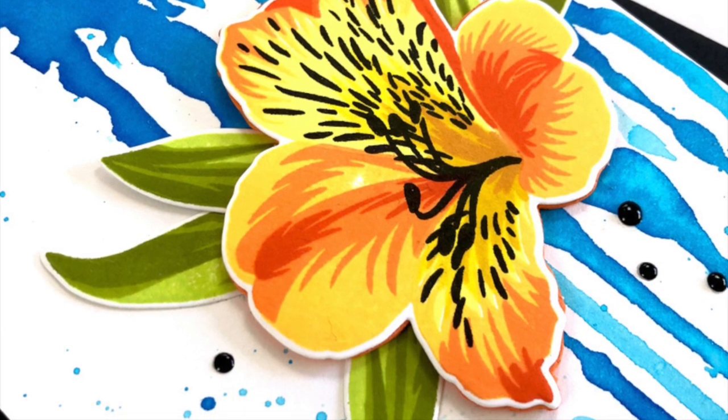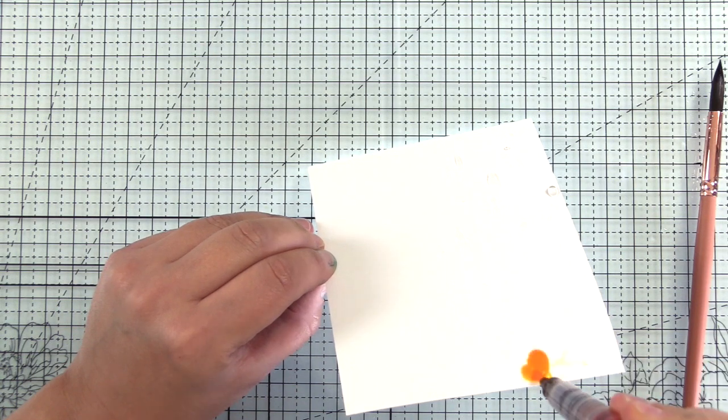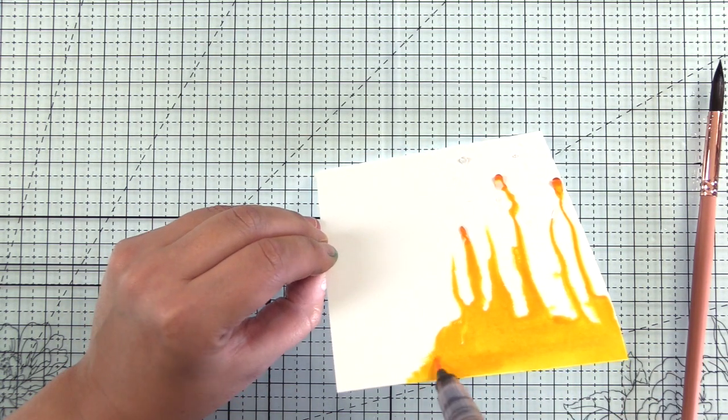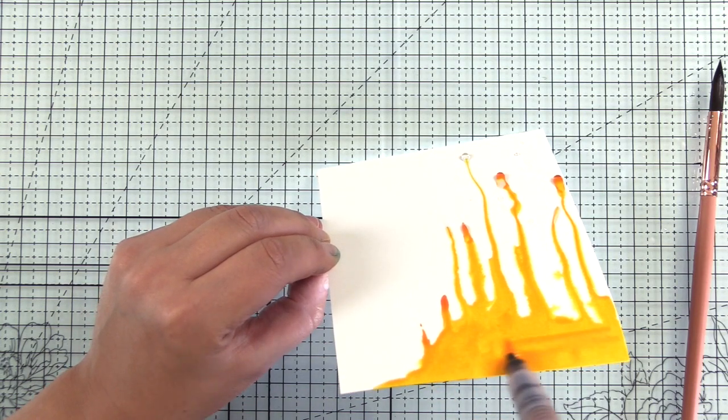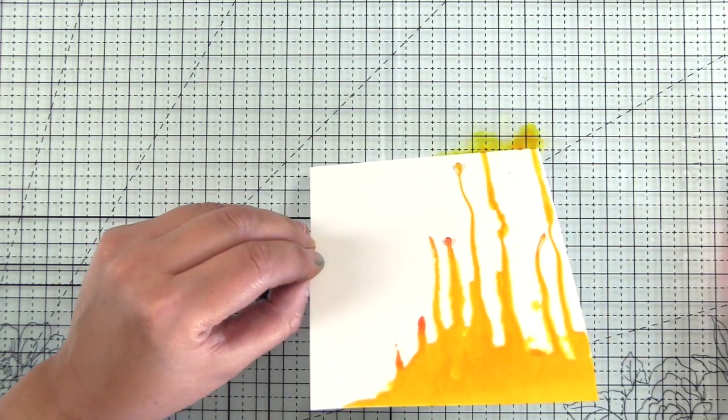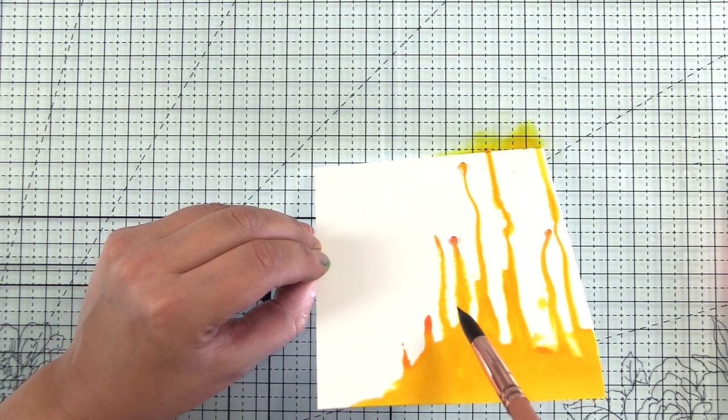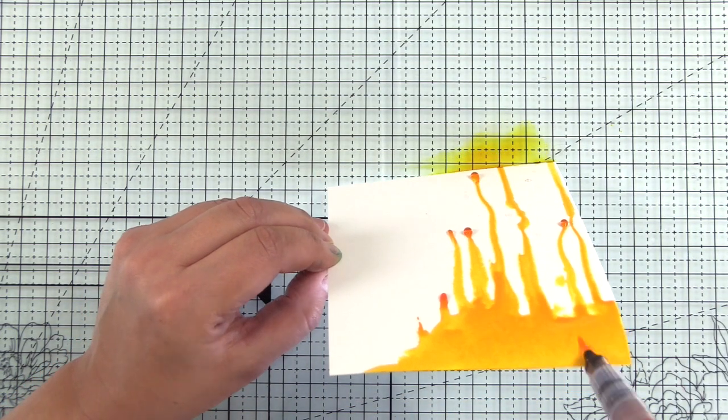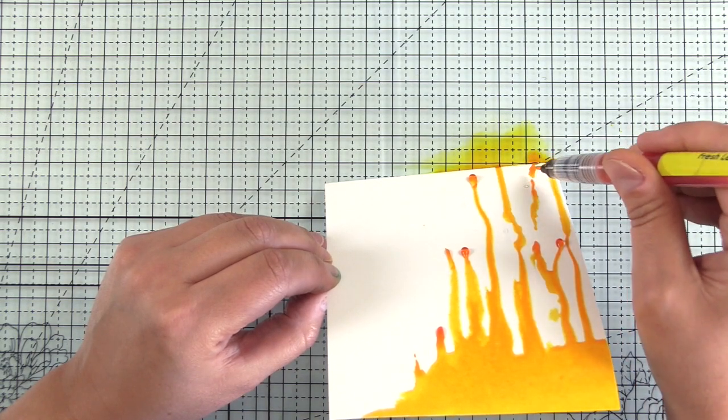So moving on to the second card, I created another waterfall background, this time with the warm sunshine brush marker from the Spring Garden set. Now I liked this background but I wanted you to have a little more variety, so I'll speed through this one and then I'll show you a couple other options closer to the end of this video.